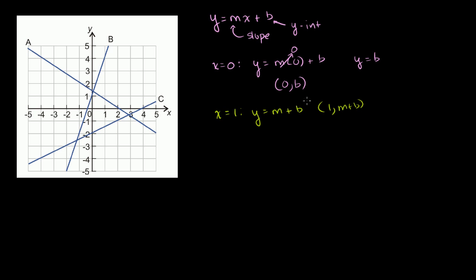So what's the slope between those two points? Let's take (1, m+b) as the end point. Our change in y is m plus b minus b, over our change in x, 1 minus 0. This is our change in y over change in x using two points. If you simplify this, b minus b is 0, and 1 minus 0 is 1, so you get m over 1, which equals m. So hopefully you're satisfied — this is definitely the slope, and b is definitely the y-intercept.